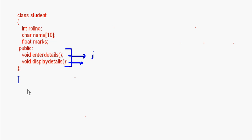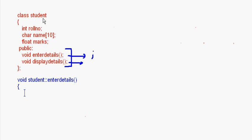Here's how to use the scope resolution operator for method definitions outside the class. First we write the return type — void — then the class name — student — then the scope resolution operator ::, and then the function name: enter_details. So it looks like: void student::enter_details. This tells us that the enter_details method belongs to the student class.